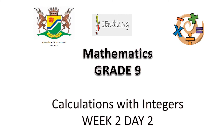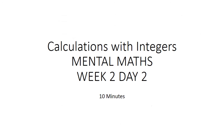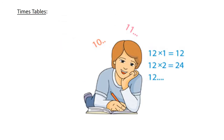Calculations with Integers. Mental maths. Times tables. 9 times 9 equals 81. 12 times 8 equals 96.